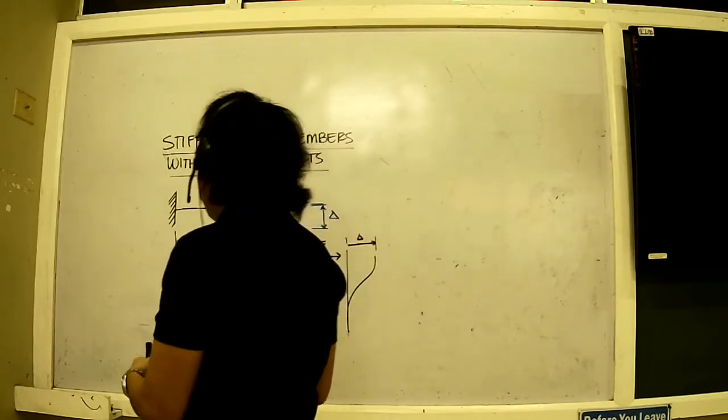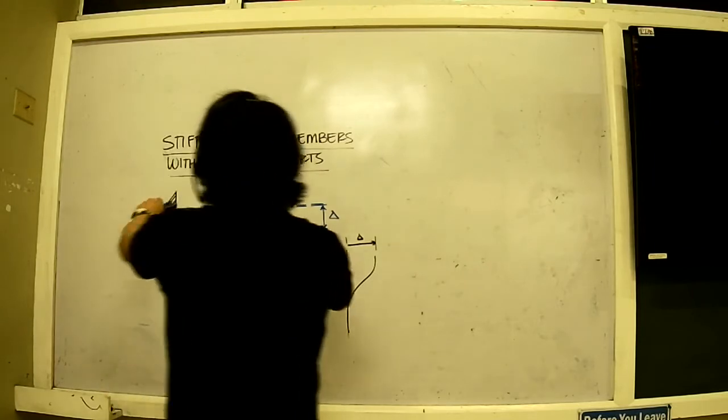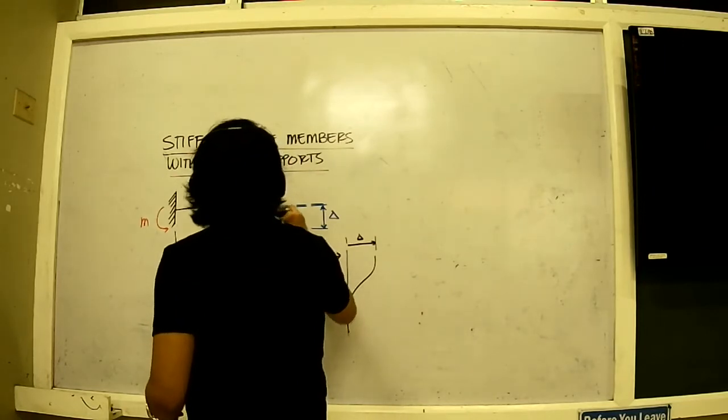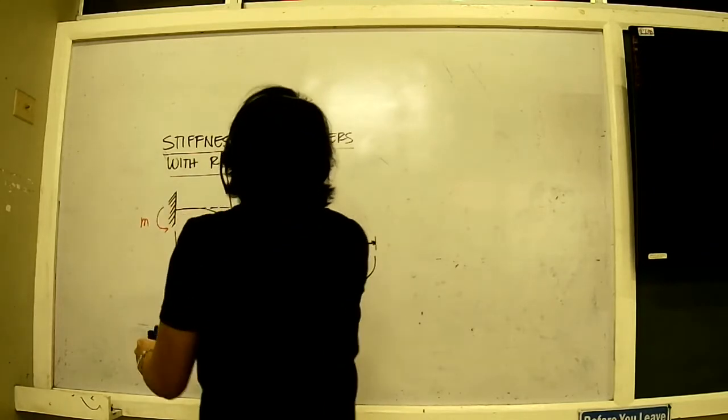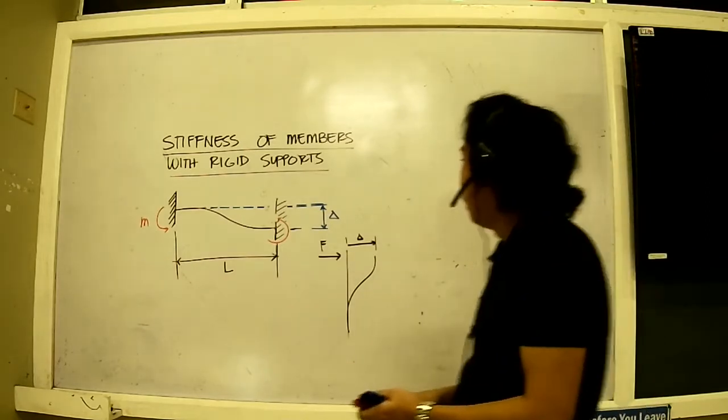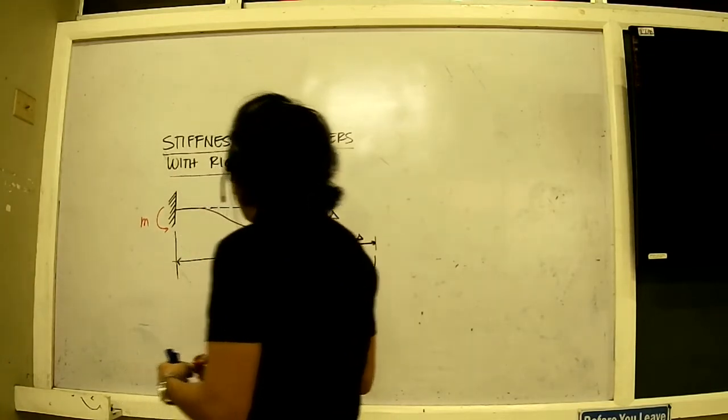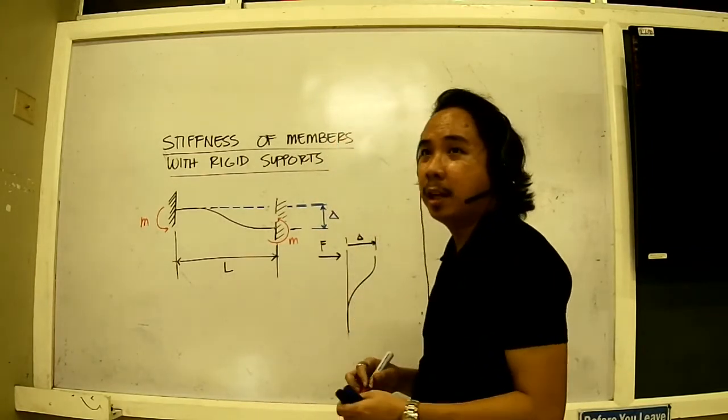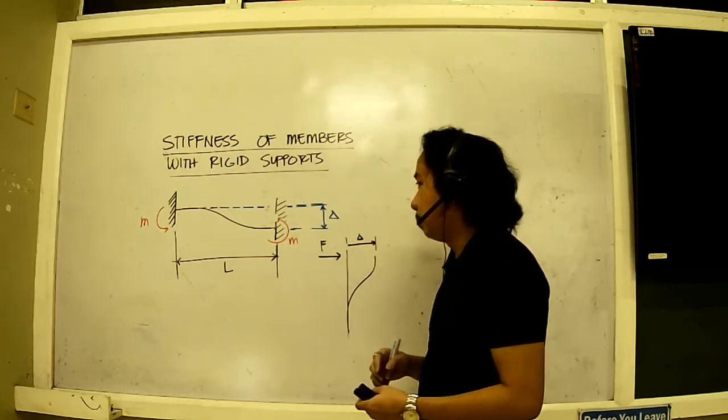Now if that is the case here, I would assume that there is a moment that is trying to twist it this way. Likewise, there is a moment that is acting right here, trying to twist it like that at the same time. This is still in static equilibrium. This needs a rotation that will counteract these two moments that have developed here.